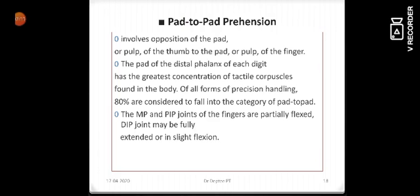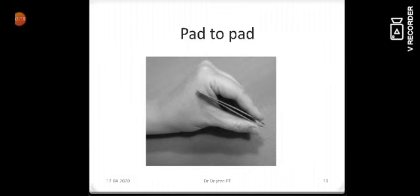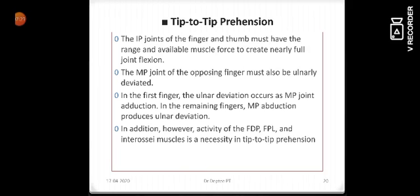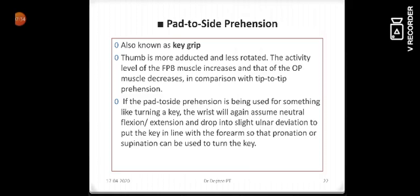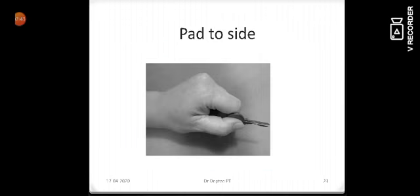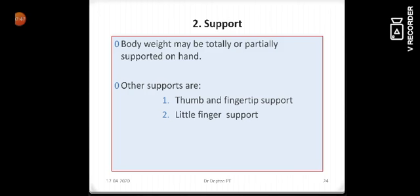The pad to pad prehension involves opposition of the pad or pulp of thumb with the pulp of the finger. It is mainly done like this. So next is the tip to tip prehension where the IP joints of the finger and thumb must have the range and available muscle force to create nearly full joint flexion like this. This is a tip to tip prehension. Then we have a pad to side prehension which is also called as key grip, like we hold the key, where the thumb is more adducted and less rotated as compared to the previous grips. This was the first function, grip.